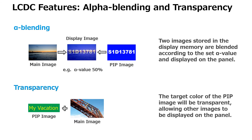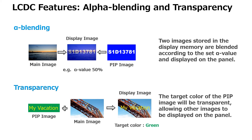Transparency enables a PIP window to specify a preset color as transparent, allowing only the desired image to be overlaid on the main image. These features improve the flexibility when using multiple display windows.